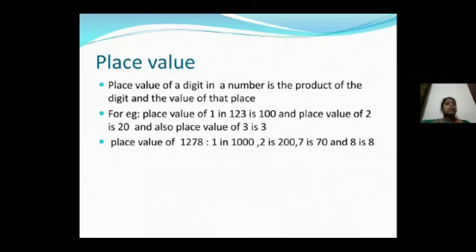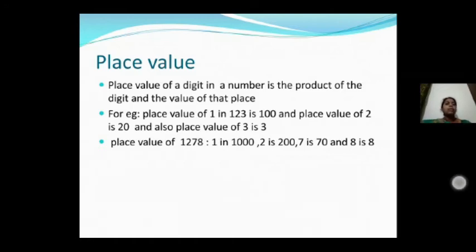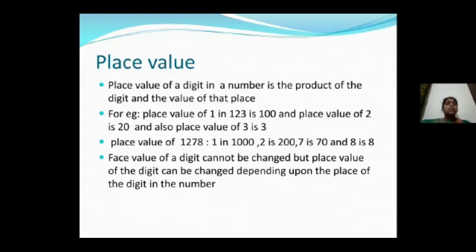For 1278: 1 is in the thousands place, so 1 into 1000 is 1000. 2 is in the hundreds place, so 2 into 100 is 200. 7 is in the tens place, so 7 into 10 is 70. 8 is in the ones place, so 8 into 1 is 8.